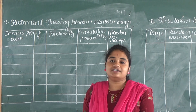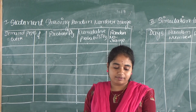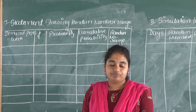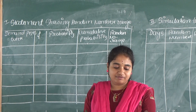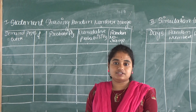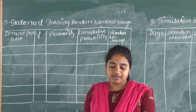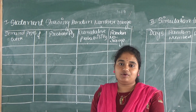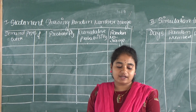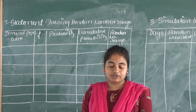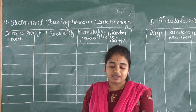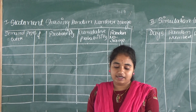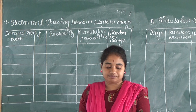So here in this problem, demand per week and frequency is given. The demand per week is 0, 5, 10, 15, 20, 25. And the frequency is 0, 2, 11, 8, 21, 5, 3.